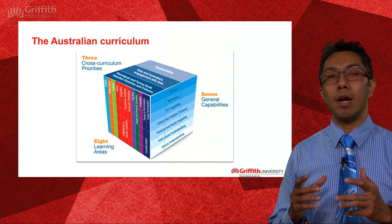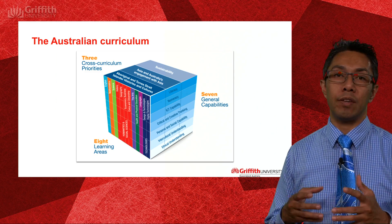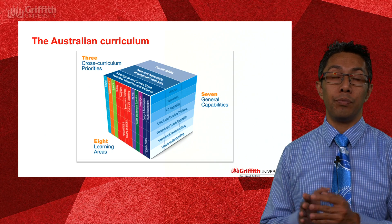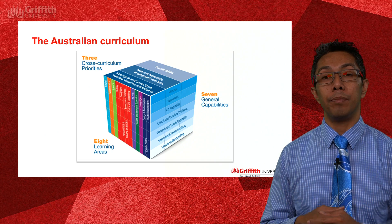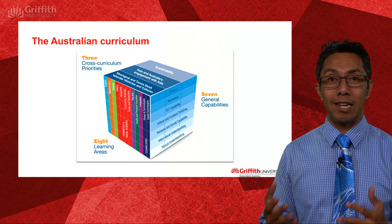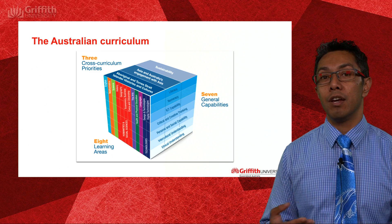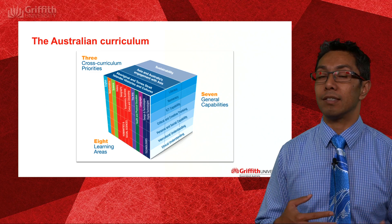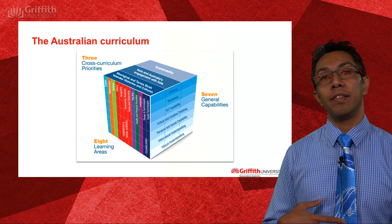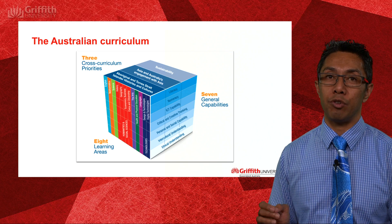To give you the big picture of where the seven capabilities fits into the Australian curriculum: the Australian curriculum is three-dimensional in nature. There are the eight learning areas — science, mathematics, history, and geography — and then there are two other elements that make it three-dimensional.